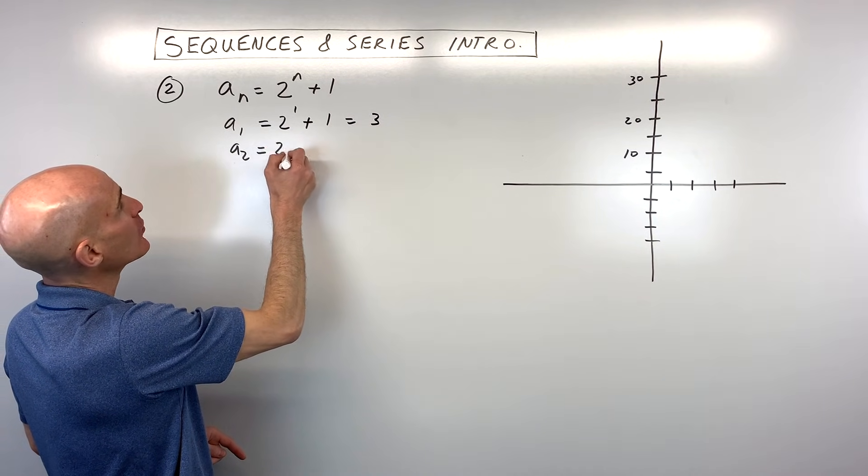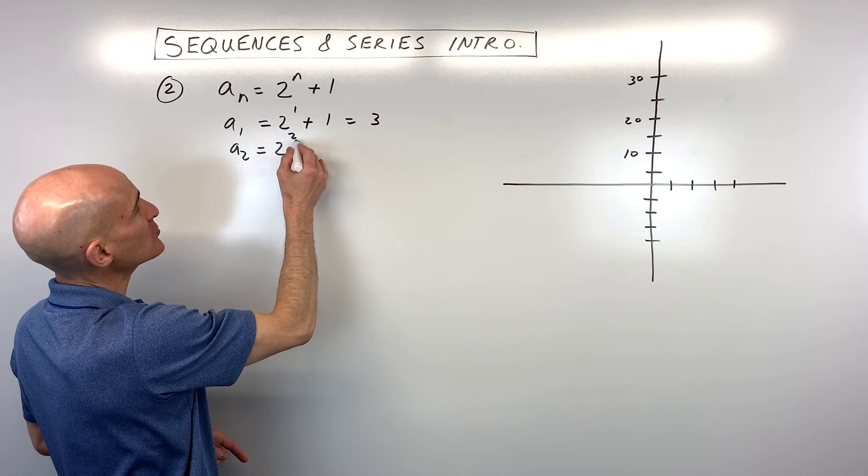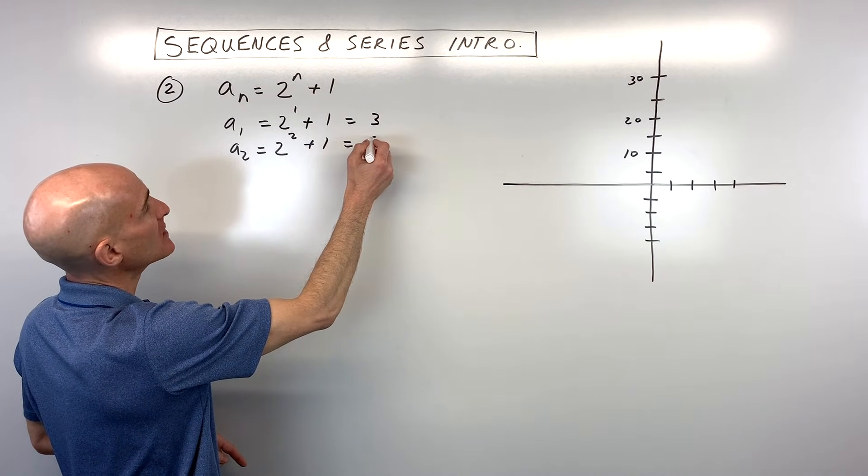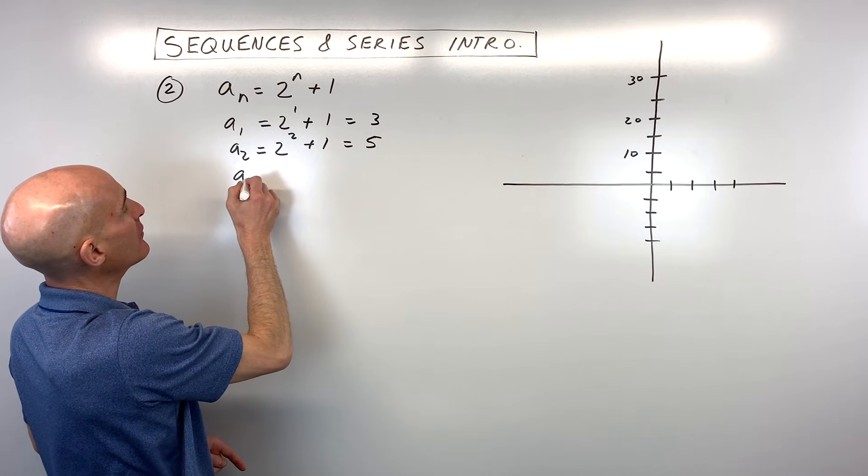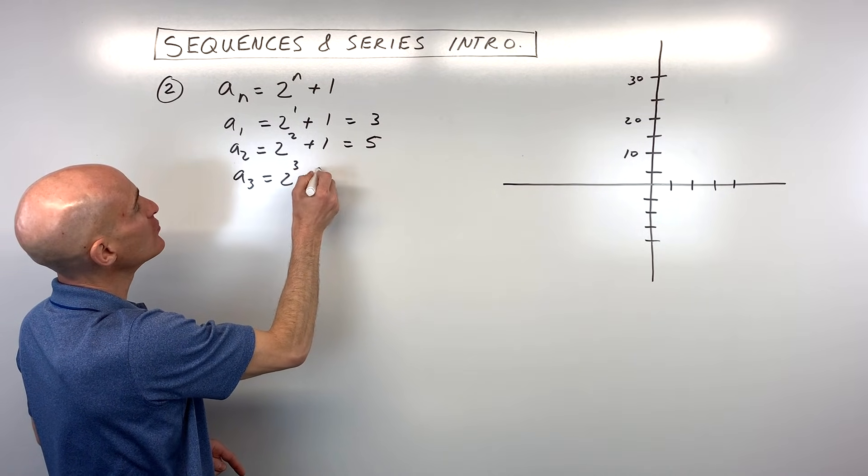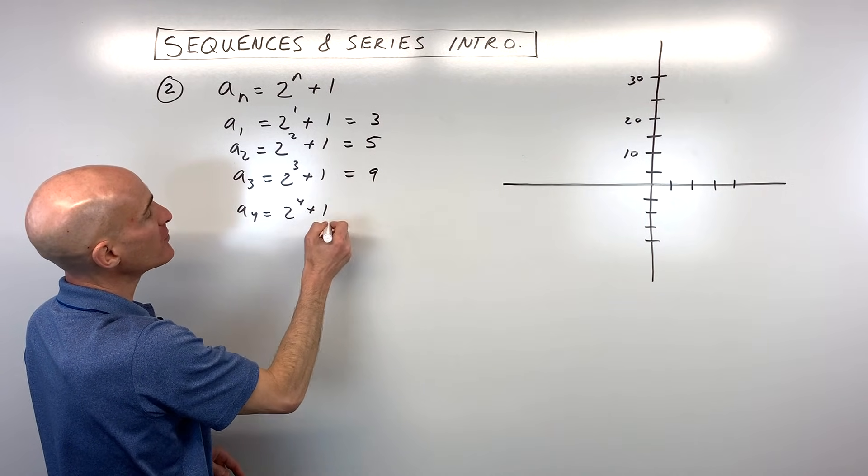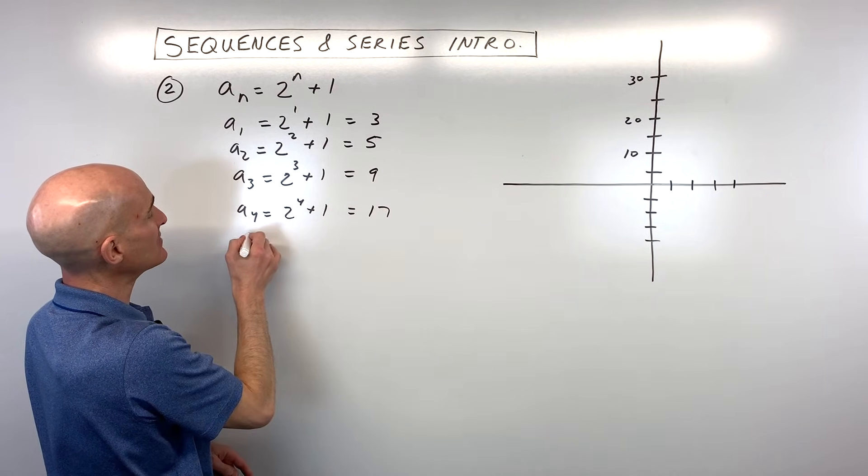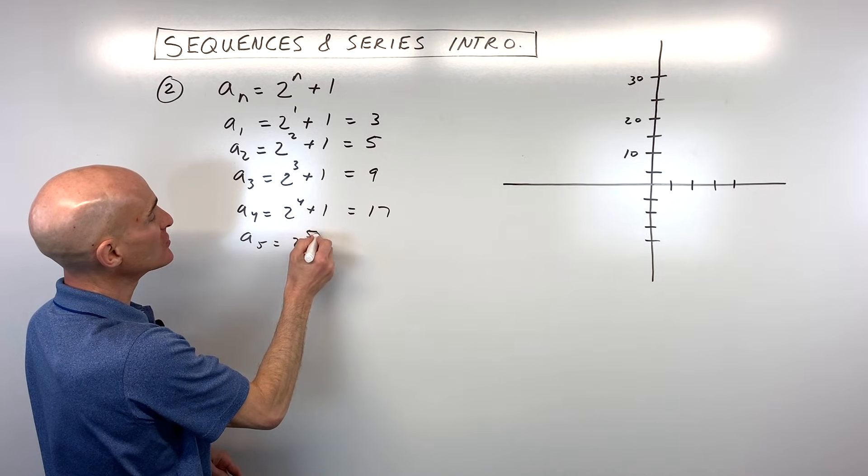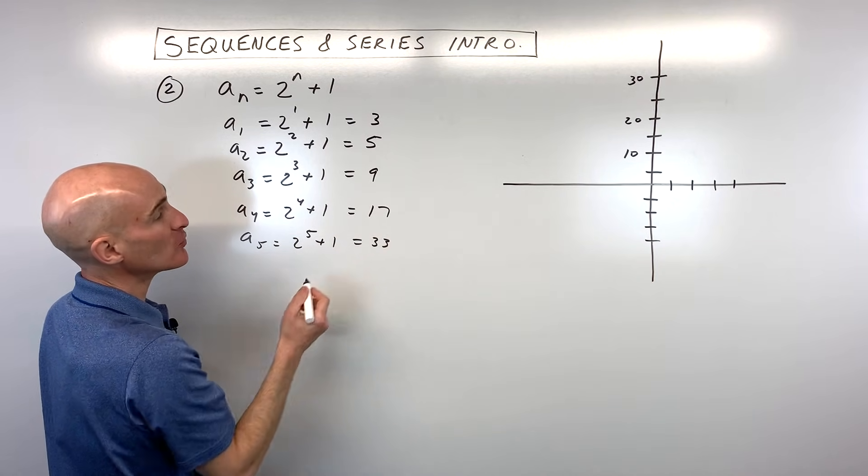The second term, we're going to now put 2 in for n. So 2 squared is 4 plus 1 equals 5. The third term, we have 2 cubed plus 1. That's 8 plus 1, which equals 9. The fourth term, we have 2 to the fourth plus 1. That's 16 plus 1 is 17. And then for the fifth term, 2 to the fifth plus 1 is equal to 33.